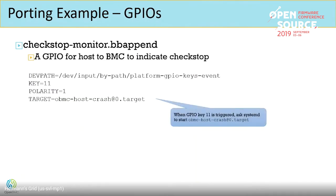The next item is GPIO. On OpenPower systems, there is always a GPIO from the host CPU to the BMC indicating a host problem — a checkstop. This config uses the GPIO key event with the key as the GPIO value. When this key is pressed, OpenBMC starts a new system target: OpenBMC host crash.